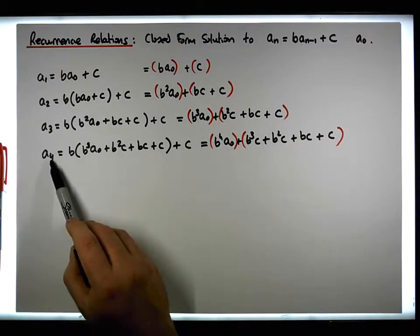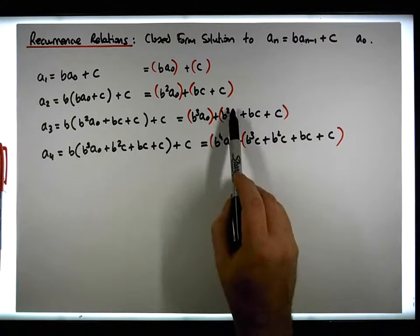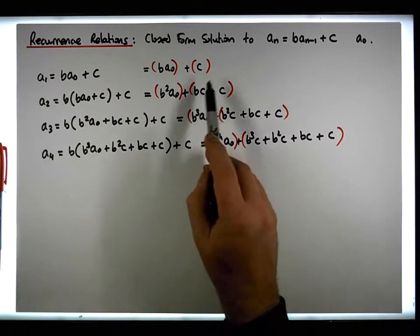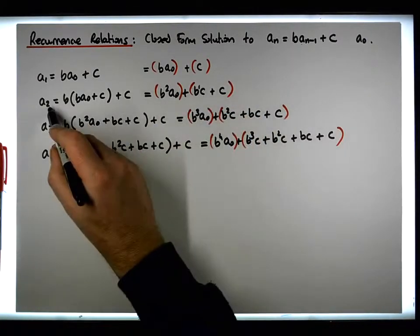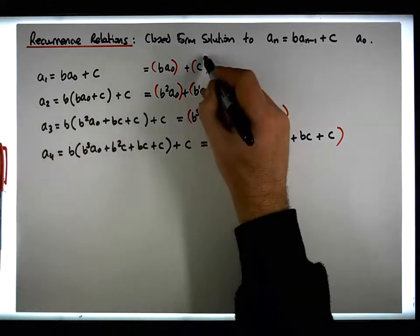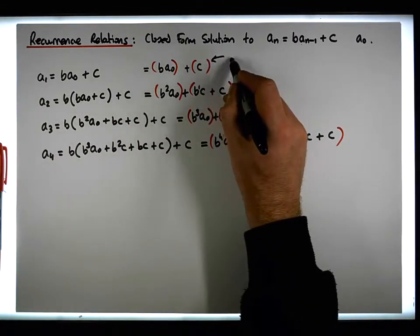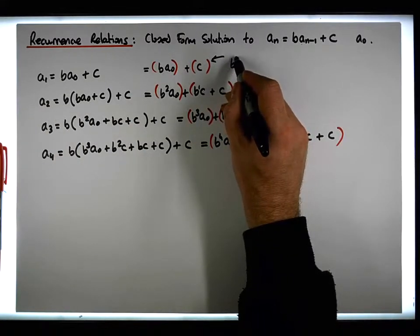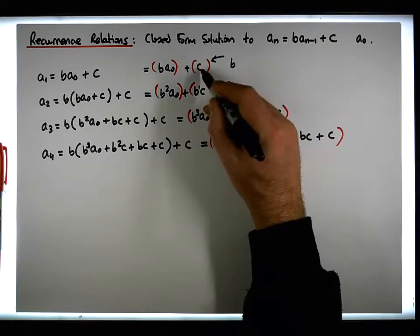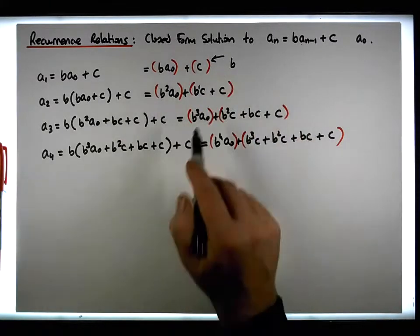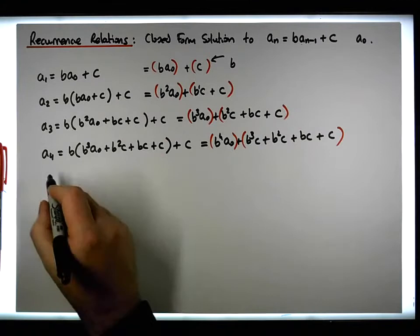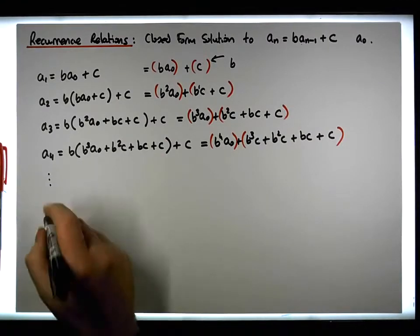It's degree 3 here for a4, degree 2 here for a3, and degree 1 here for a2. Hidden in there, we probably have a b to the 0 effect as well. So we can actually continue this pattern down to the nth term.